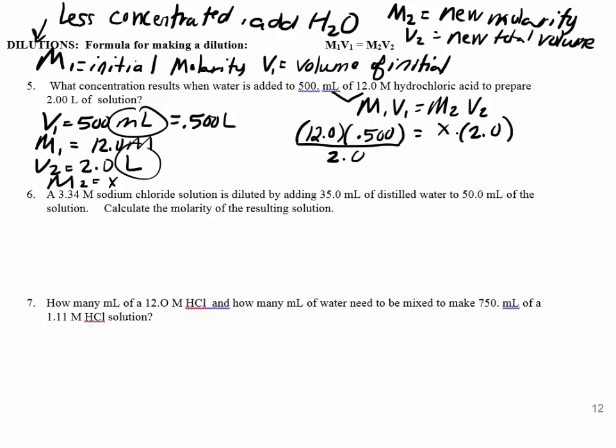So then you're going to multiply 12 times 5 divided by 2. So you need to divide by 2 to get it by itself. So X, which equals M2, that's your concentration, equals a 3 molar solution. So you've diluted it from a 12 molar solution, which is pretty concentrated. That means there's 12 moles in there to a 3 molar. There's only 3 moles in there.